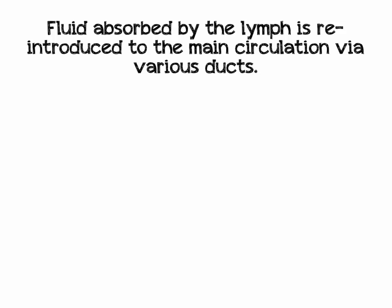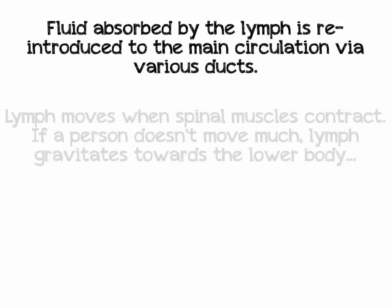Fluid absorbed by the lymphatic system is reintroduced to the main circulation via various lymphatic ducts around the body. When the fluid is in the lymph system, we call it lymph. To summarise: plasma when it's in the blood vessels, tissue fluid when it's bathing the tissues, and lymph when it's in the lymphatic system.